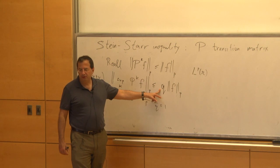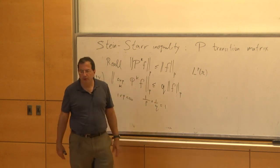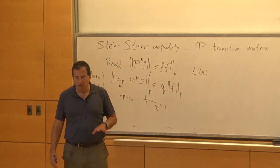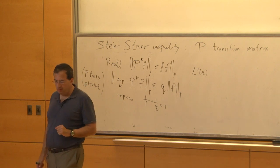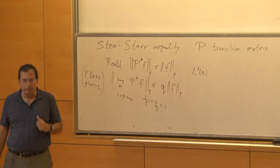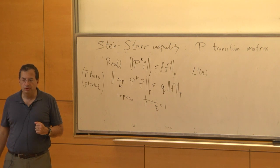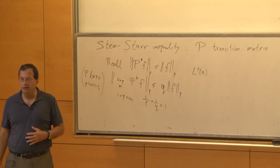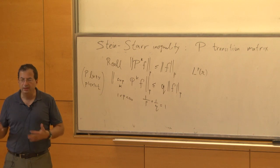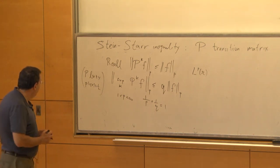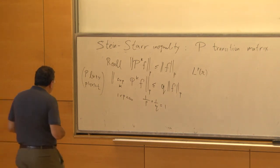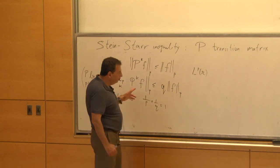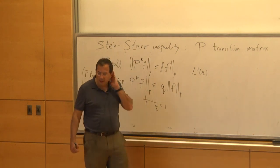It won't matter for us too much, because if you're interested in p equals 2, it doesn't matter. But I emphasize this sharp form found by Star, because we have other applications where it's important to let p tend to 1 or infinity, and in those cases the right dependence really matters. Stein proved this in 1961, then Star in 1966.